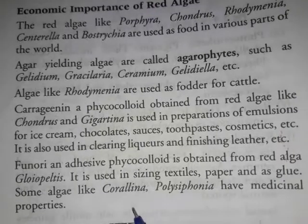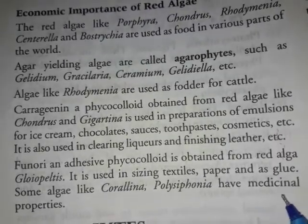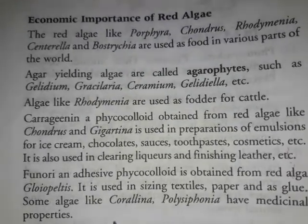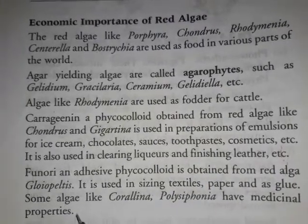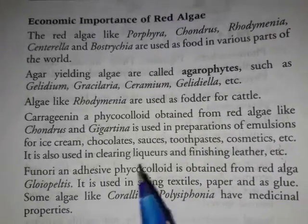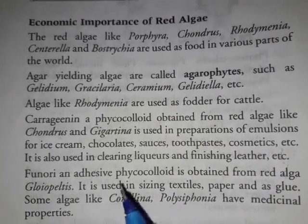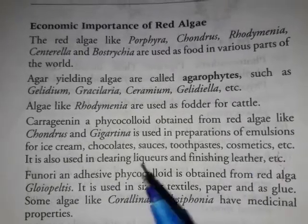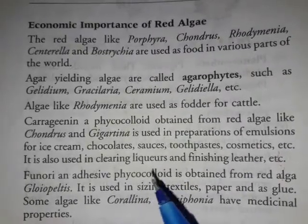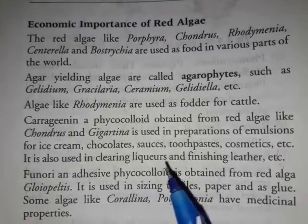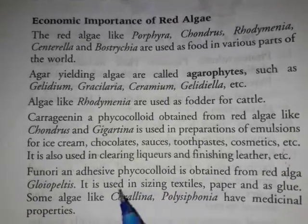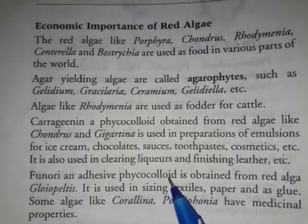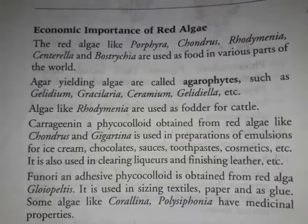Some algae like Corallina and Polysiphonia have medicinal properties. So these are all the red algae and their economic importance. We have studied all three algae — green algae, brown algae, and red algae. Our topic is complete. After this we will start Bryophytes, which is the second division of the Plant Kingdom.